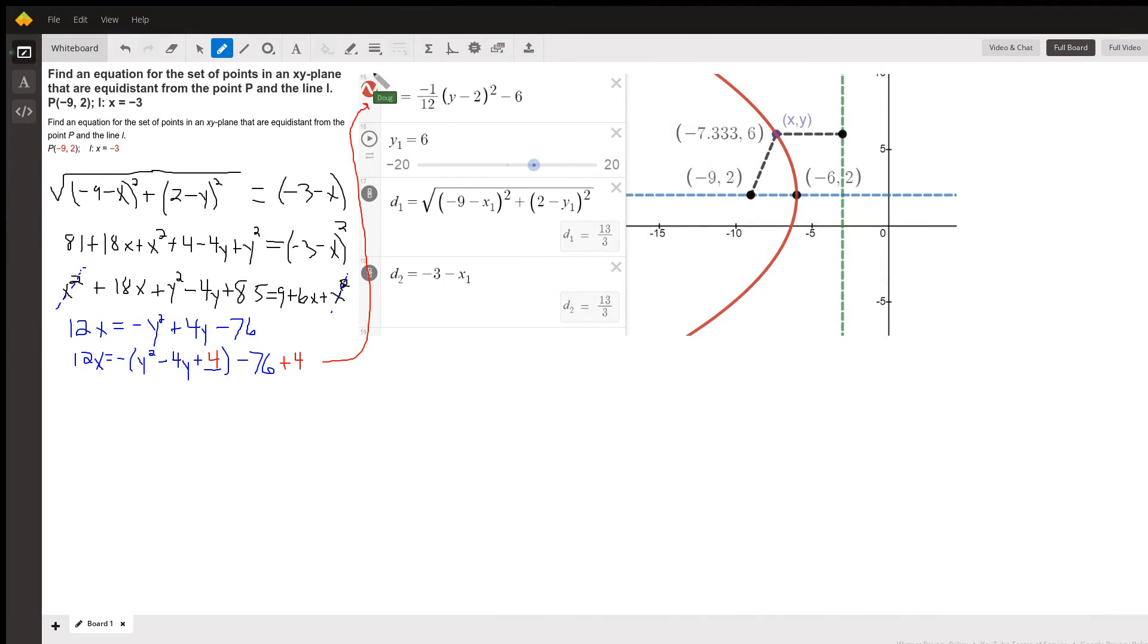I thought I'd provide an answer here that's a little different than the standard type of answer. It is indeed the case that the set of points in an xy-plane that are equidistant from a given point, in this case the point (-9, 2), and a given line, x equals -3, this green dotted vertical line, is a parabola. So this problem could have been stated, find the equation of a parabola with focus at (-9, 2) and directrix x equals -3.